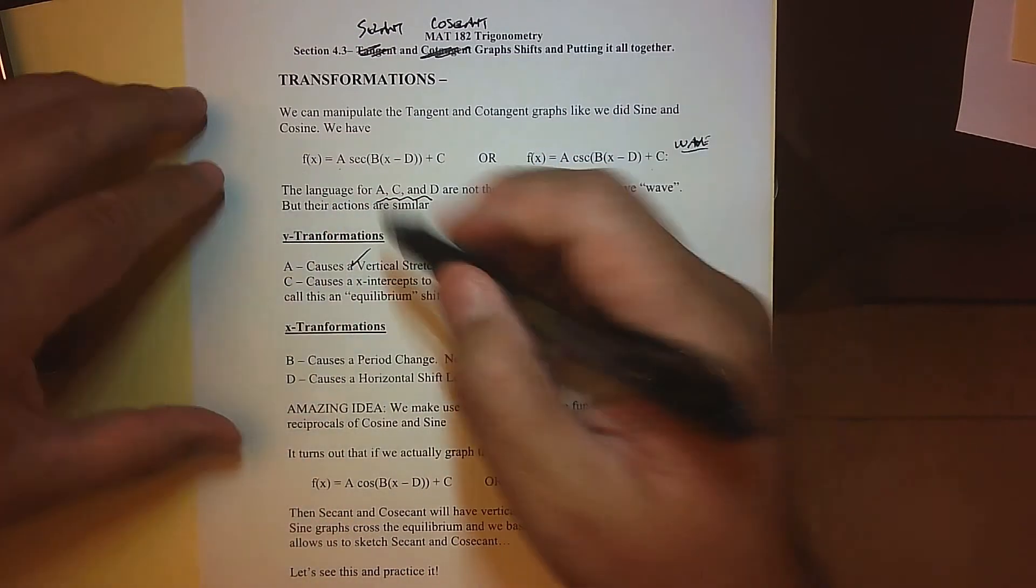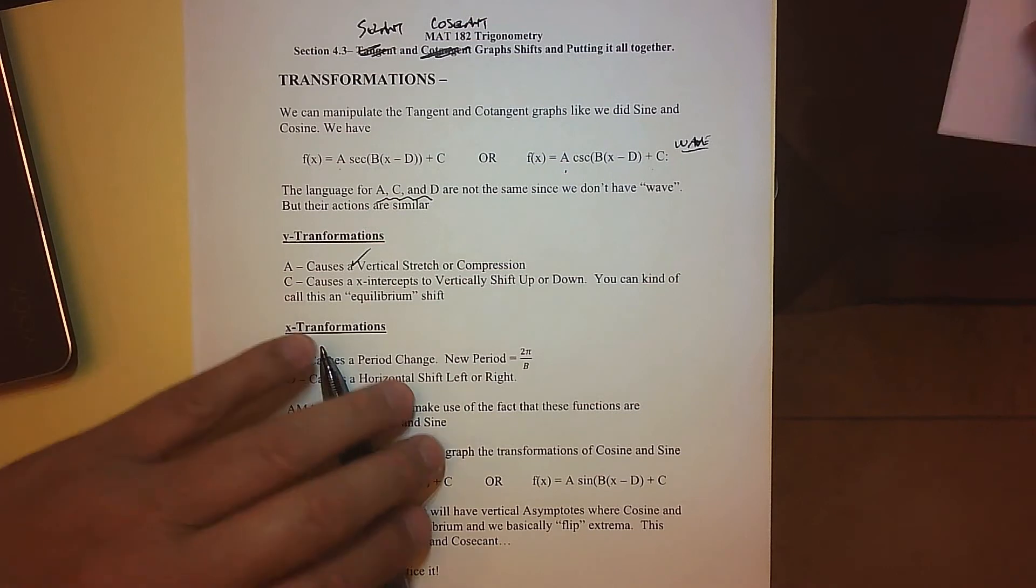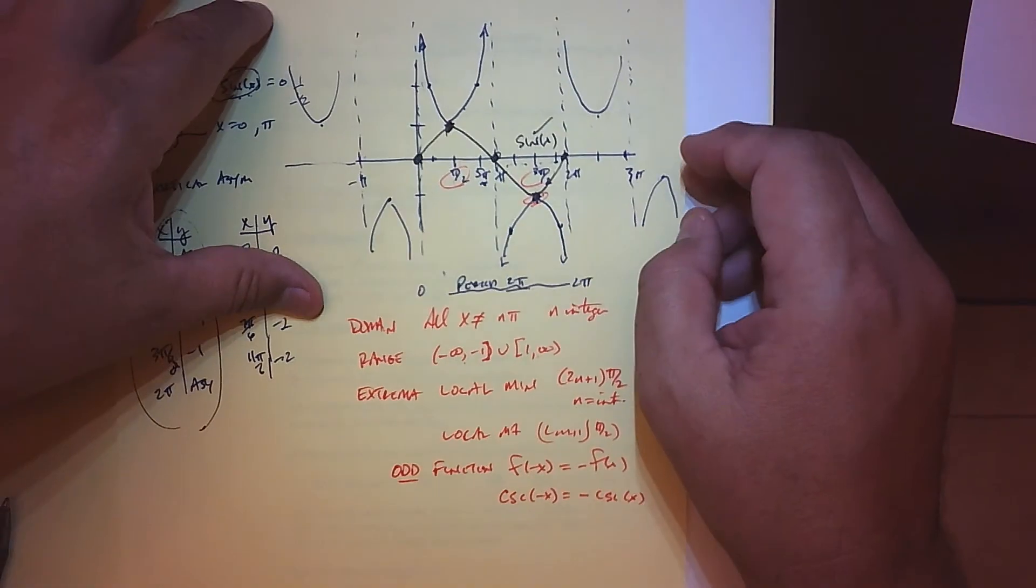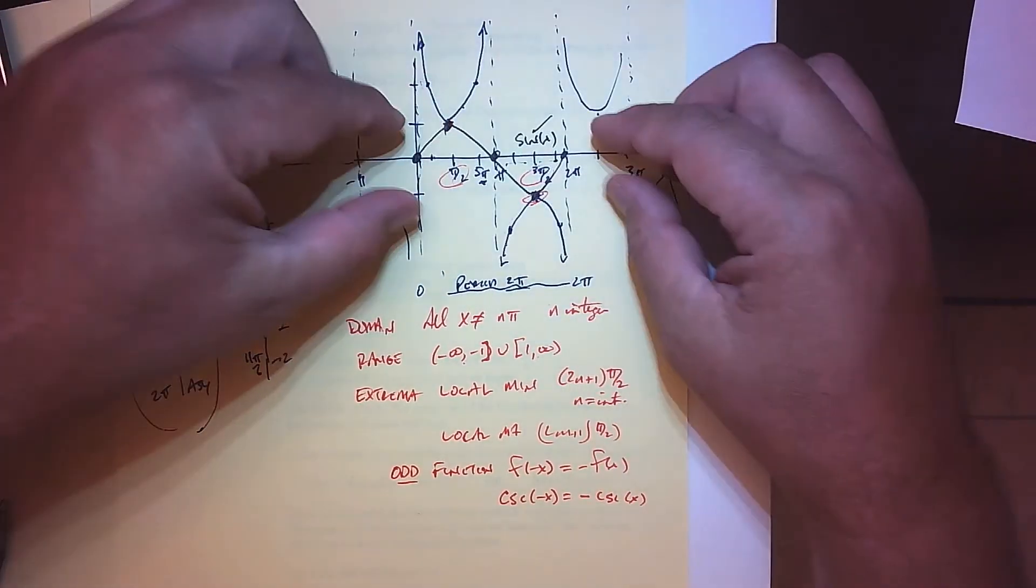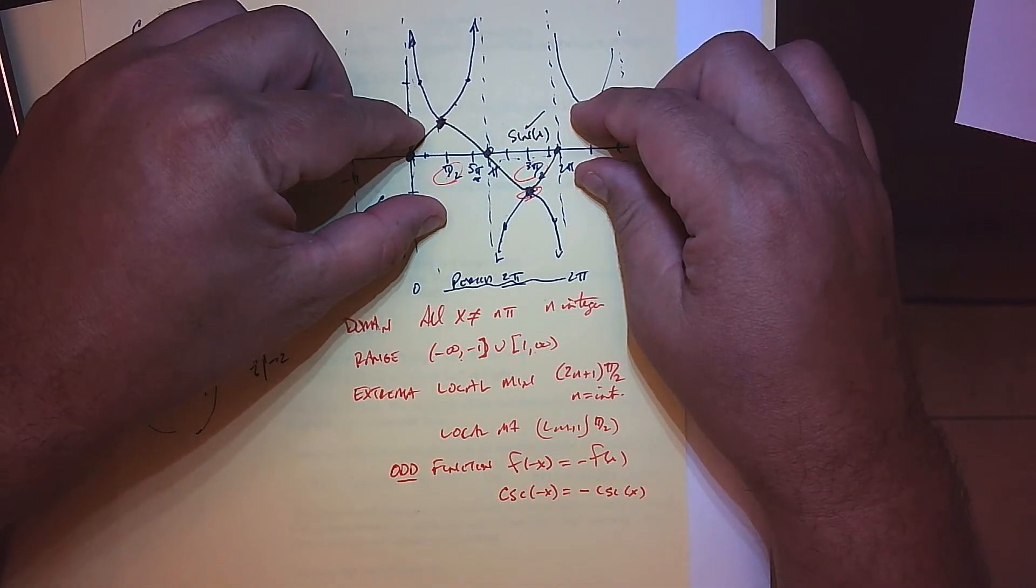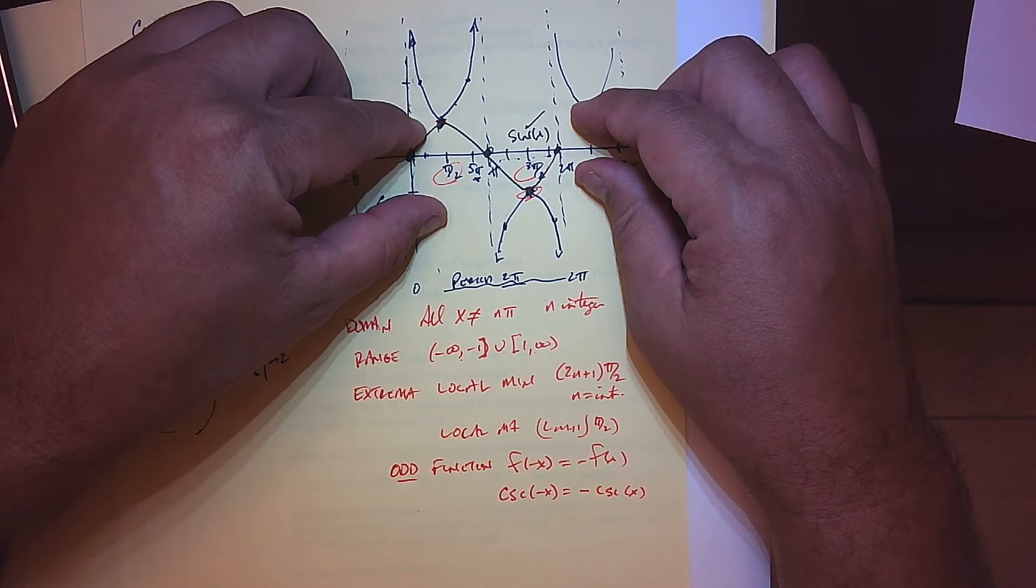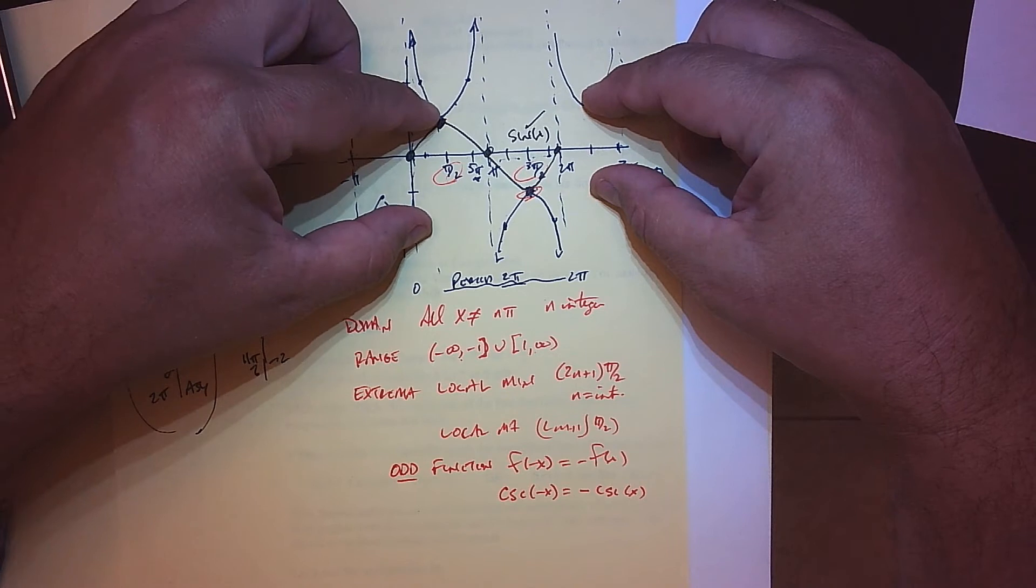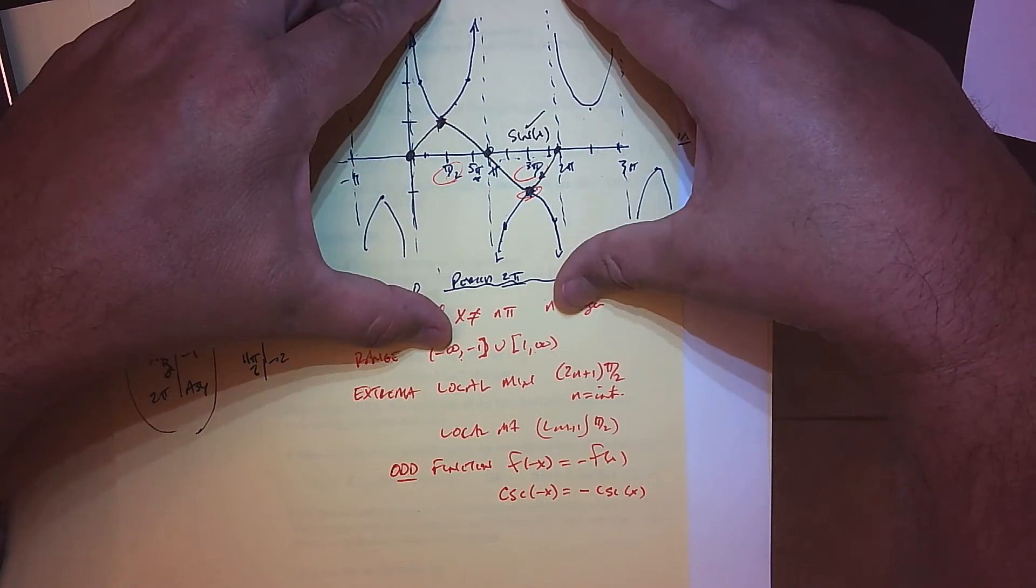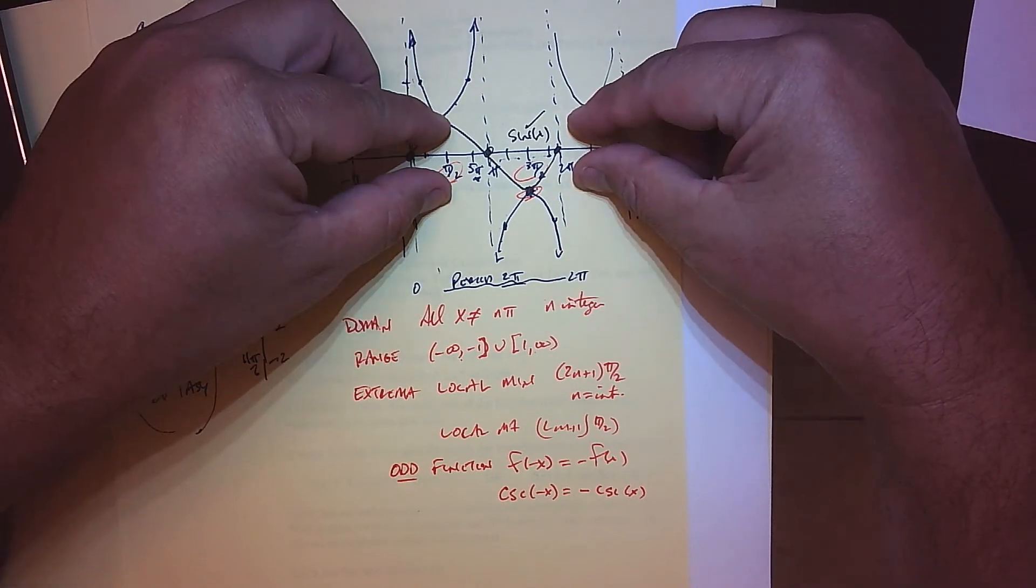But we do know that the a causes a vertical stretch or compression, so that basically means these u-shapes that we have, if we multiply it by a it makes that sine graph larger or compressed, and that basically is going to take these high and low points and expand them out or make them compressed.